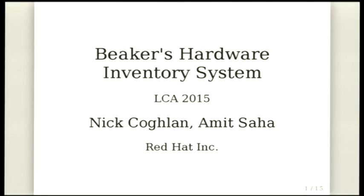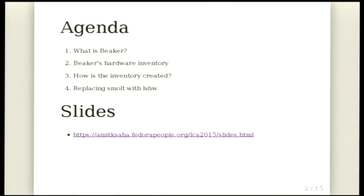One of the big projects we work on is Red Hat's hardware integration testing system — the thing that lets everybody else not worry about the CPU details and all that sort of stuff. I'll go through a little bit about what Beaker is, what the hardware inventory system is and some of our unique requirements, how we go about creating that inventory, and then the bulk of the talk will be about an interesting migration problem we've had recently in terms of having to replace one of the key components for collecting that inventory data.